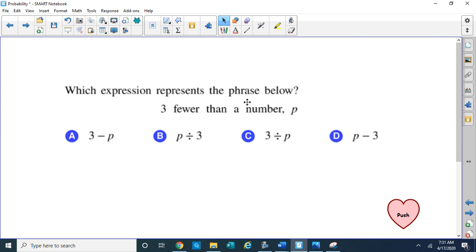Which expression represents the phrase below: 3 fewer than a number, P. Fewer than is another way of saying less than. And if you remember in class, I told you when you see less than, you have to do something to the first term that's switching. That means the 3 goes back here on the end, and the other term goes in the front. So you have to switch them. Fewer than is another way of saying less than or minus from. So since the 3 goes in the back, it cannot be in the front, so that's why A is wrong.